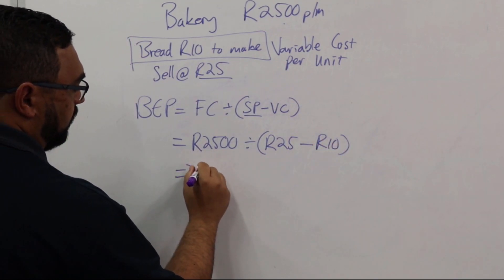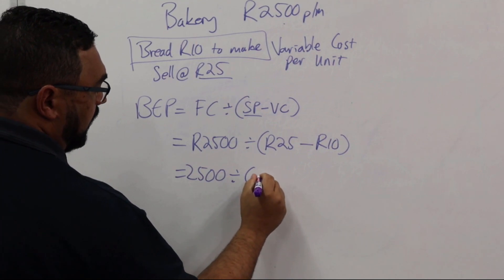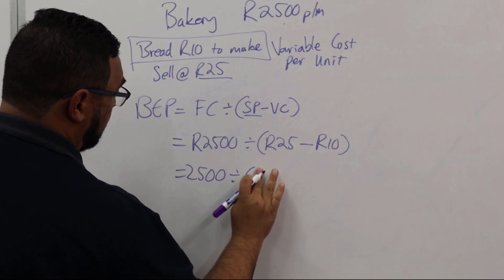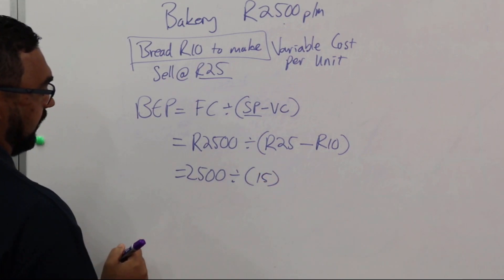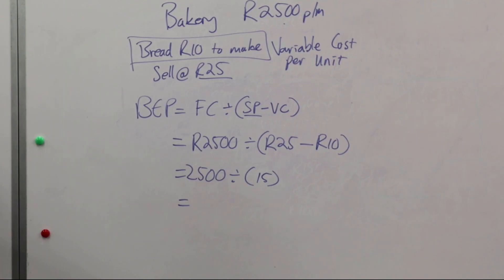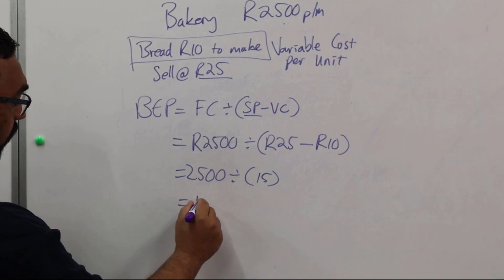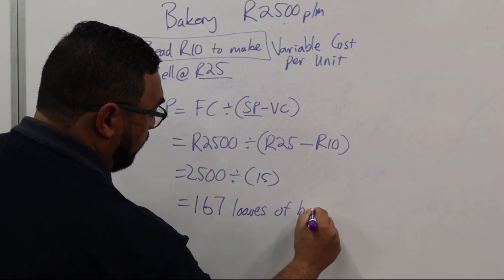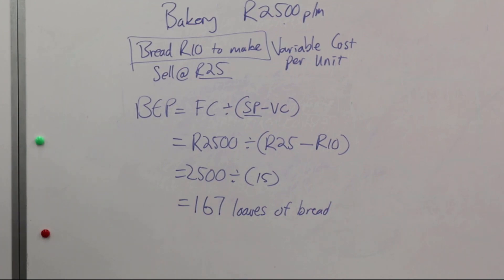So that's 2,500 rand divided by 25 minus 10, which equals 15. That gives us 167 loaves of bread that need to be sold to break even. And again, from that point, anything we sell after that becomes pure profit.